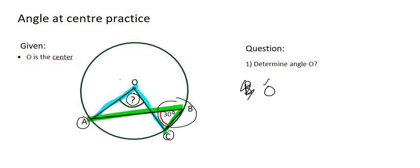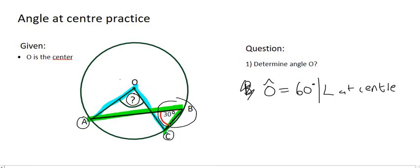We'll say that angle O is going to be equal to 60 degrees. Why? Because the angle at the center is always equal to 2 times the angle at the circumference.